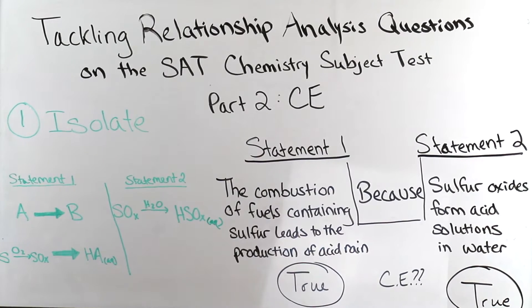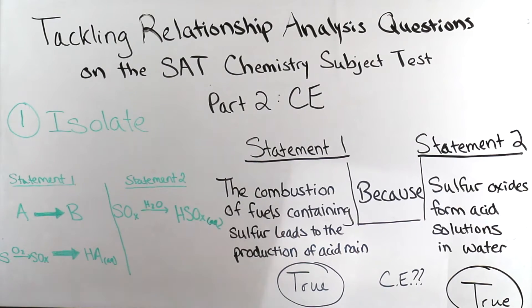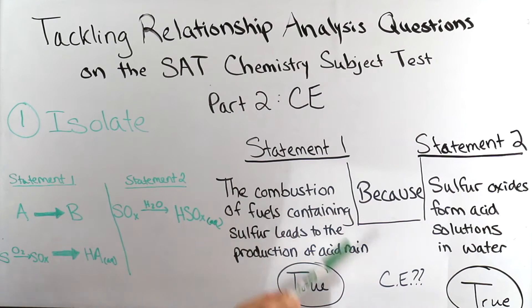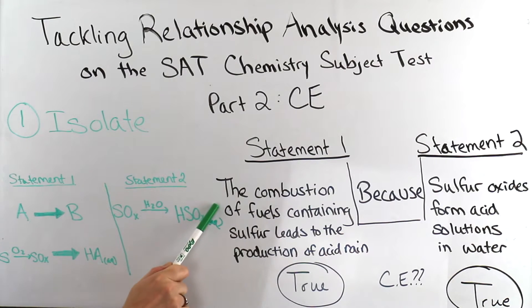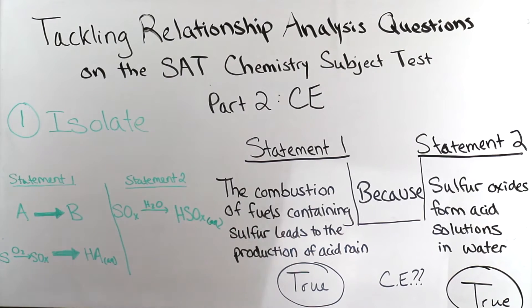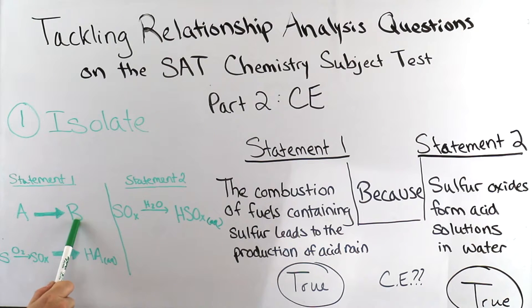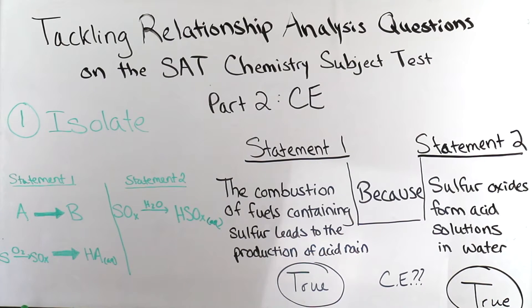Step one is isolate. We want to isolate the phenomenon in statement one and isolate the explanation in statement two. Using our same example from the College Board website, we can see that in statement one we have an A to B process: combusting fuels with sulfur leads to the production of acid rain. We can write this as A yields B. What we're looking for is this arrow — the process for which we want a correct explanation.